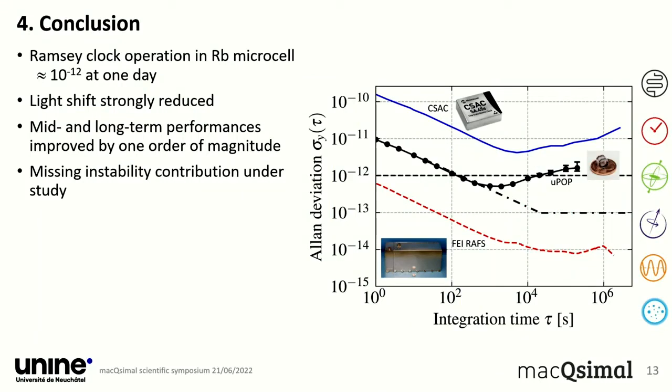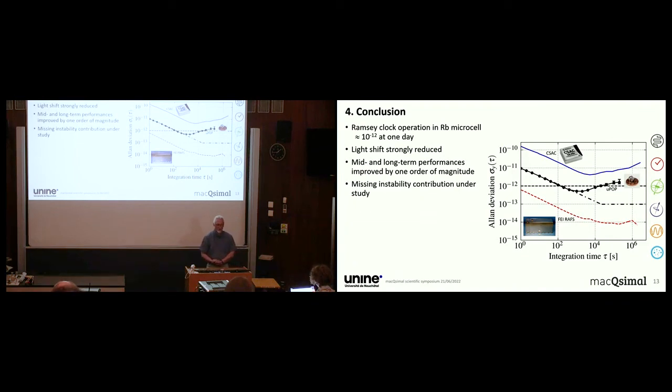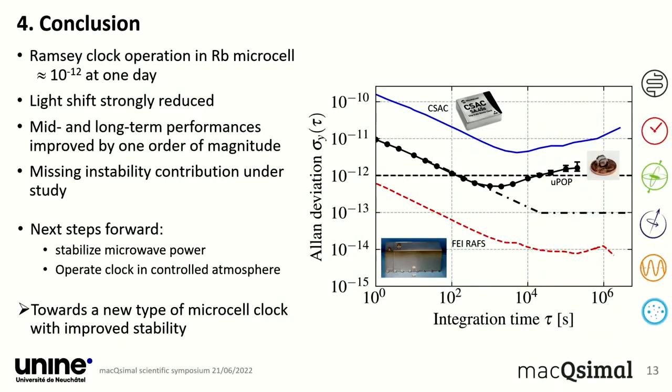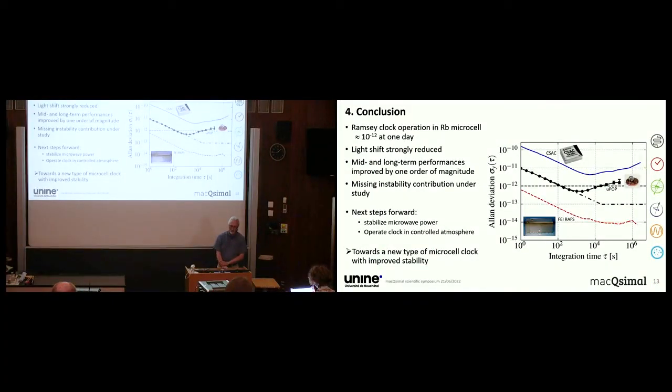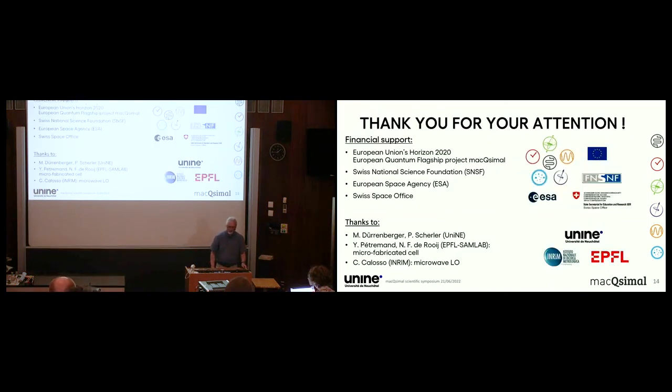As a conclusion, I want to tell you that we have demonstrated the Ramsey clock operation using a rubidium microcell with obtaining 10^-12 level stability at one day on the long time scales. The light shift is strongly reduced and is not a limitation to this clock performance, to this clock operation. The mid- and long-term performances could be improved compared to the CW case by one order of magnitude, and we believe that there is a good potential to further reduce the stability into the few 10^-13 range, and some still missing long-term stability contribution is under study. With this, we think the next steps will be to stabilize the microwave power in order to get this microwave power shift under control and to operate the clock in a controlled atmosphere. With this, we think we have identified a good candidate to improve further on the stability of miniature atomic clocks. Thank you for your attention.